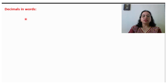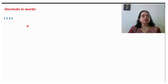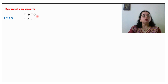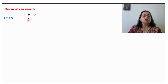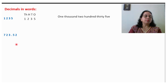Now, decimal in words — how to write. So 1235 is given. How do we read this? The best thing is to first write the number, then above each digit write down the places. We read this as 1235. This we have done in chapter 1 as well.